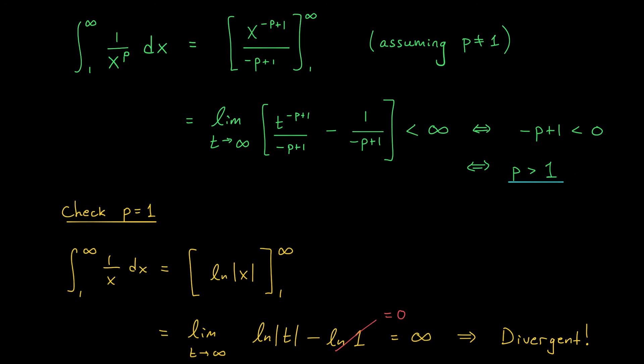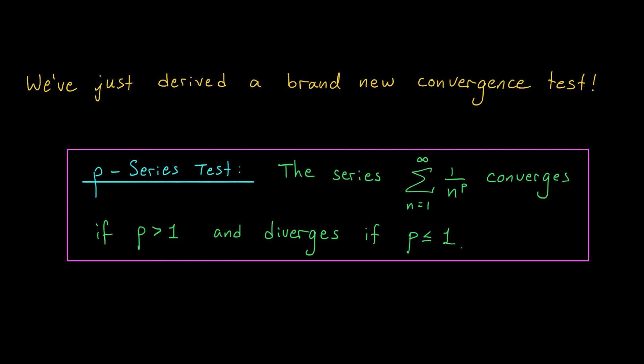Putting everything together, we conclude that the series converges exactly when p is greater than 1. This is a useful enough fact to record as a brand new convergence test: the p-series test. It states that the sum from 1 to infinity of 1 over n to the p converges when p is greater than 1, and diverges when p is less than or equal to 1. Although this test applies only to series of this specific form, it becomes very powerful when combined with comparison techniques — if you can compare a complicated series to a p-series or geometric series, you can often determine its convergence. That will be the topic of our next lesson: the comparison test.